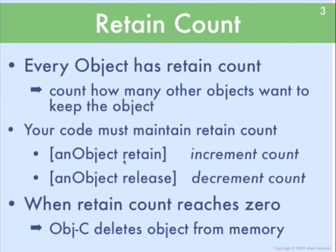When you pass the retain message to an object to call the retain method, this increases the retain count by one. When you pass the release message, the release method will decrease the retain count by one. The basic mechanism is that when the retain count reaches zero, Objective-C will delete the object from memory. So you write the code that maintains the retain counts, and when it gets to zero, Objective-C will then delete the object for you.